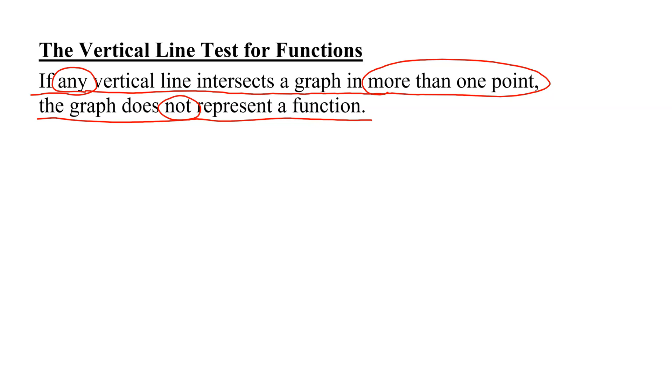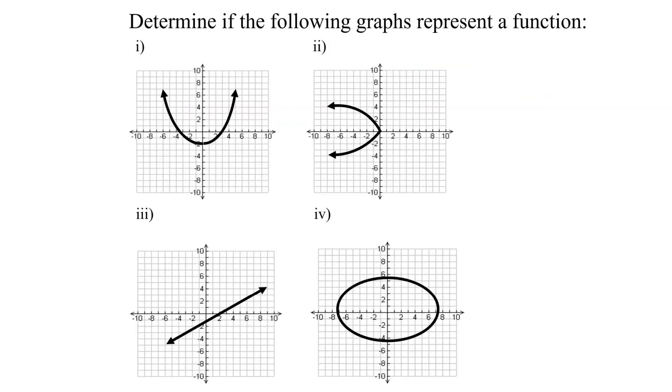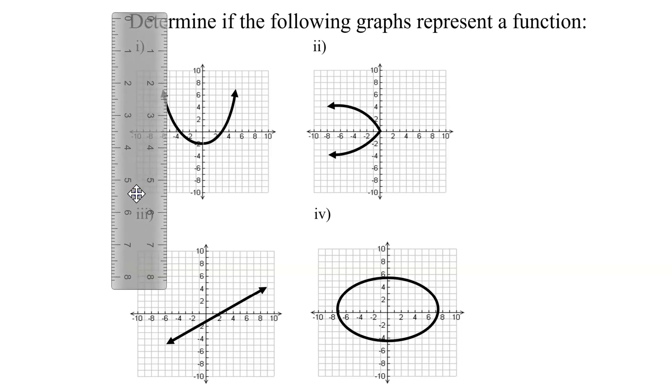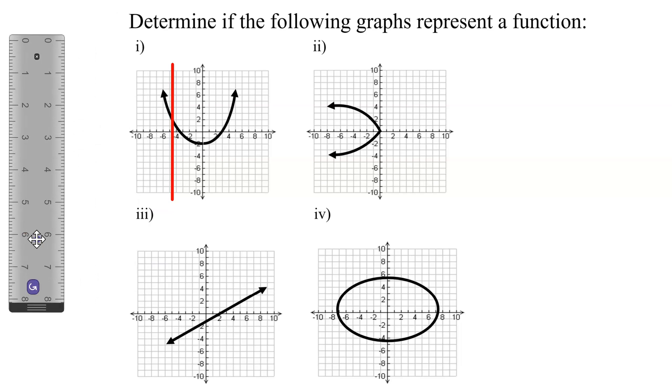So let's go back to our four examples, and I'm going to be using a vertical ruler to help represent vertical lines. So let's look at the first example. If I move my ruler, it's a vertical ruler, from the left, and I stop here and draw a vertical line, how many times does that vertical line cross my graph? Just one time.